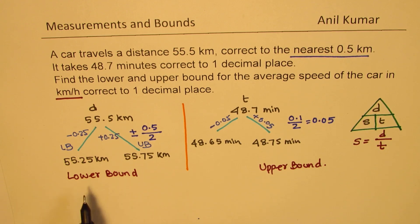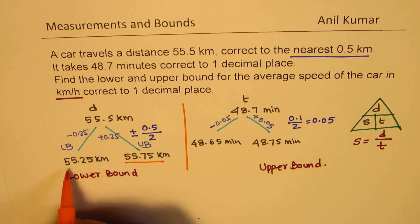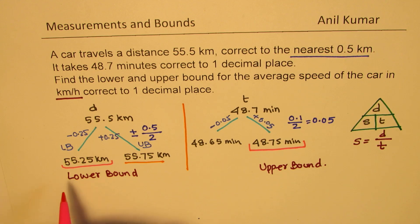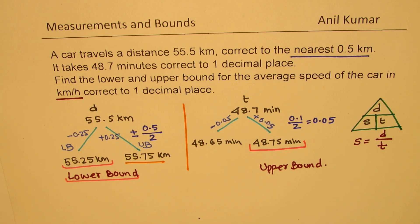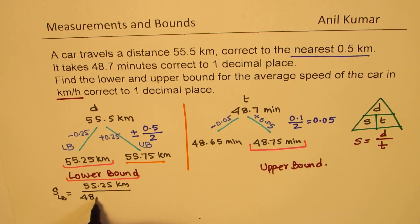Lower value is when I take lower value of distance and higher value of time. To get the lower bound, we have to take the lower value of distance with the higher value of time. You are dividing by a higher value, so you get the lower bound. Let's do this calculation. The lower bound of speed equals distance 55.25 kilometers divided by time 48.75 minutes.